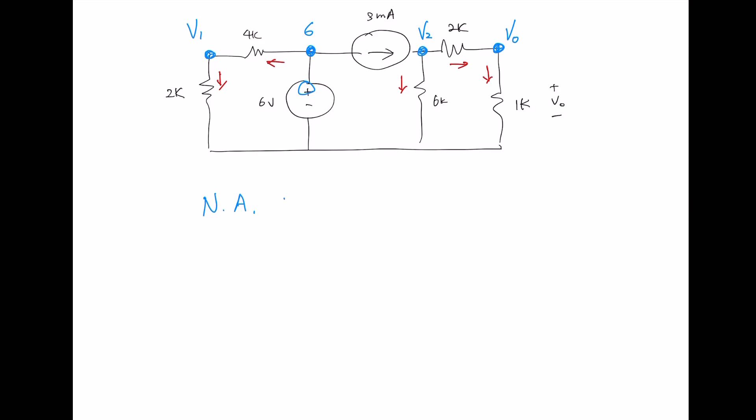That means we need to do KCL at V2. Then entering is 3 milli, equals there are two leaving V2 minus V0 over 2K plus V2 over 6K. So from here, we can multiply everywhere by 6K.